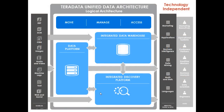The Teradata Unified Data Architecture consists of three components. One of those components is Aster, and Aster fits down here to the right in this server. Up here, this box represents any data warehouse product — it could be Teradata, it could be Oracle, it could be SQL Server, any JDBC-compliant system that has a SQL database.